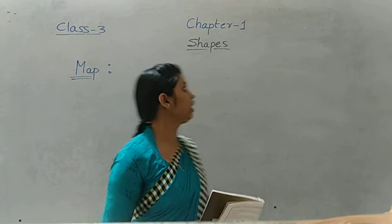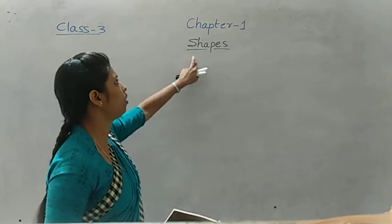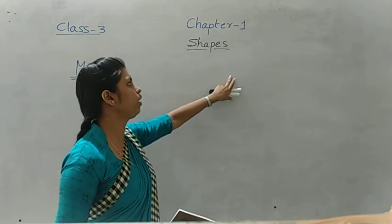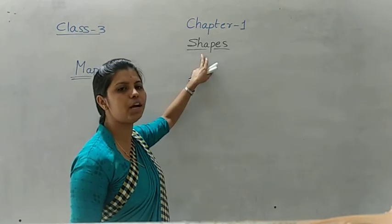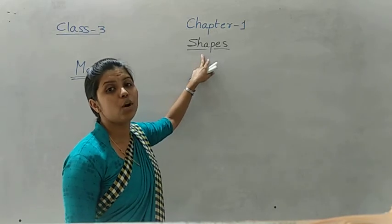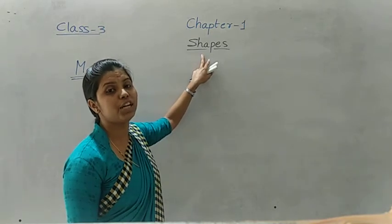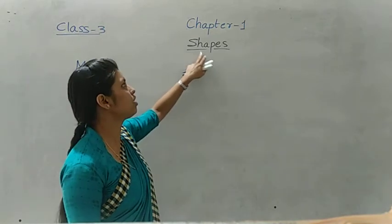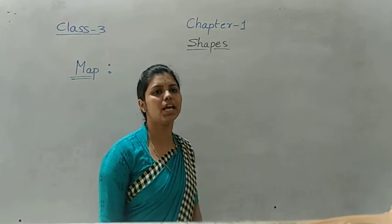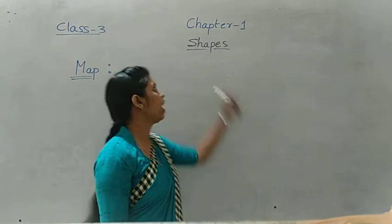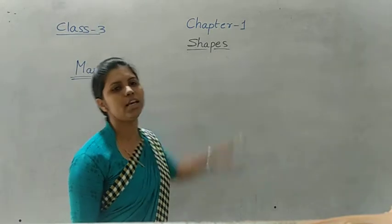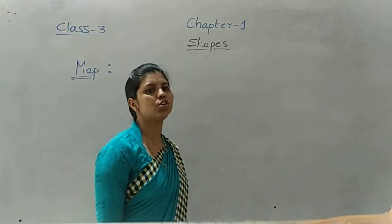That is Chapter 1 - Shapes. What is the name of Chapter 1? Shape. What is the spelling of shapes? S-H-A-P-E-S, shapes.